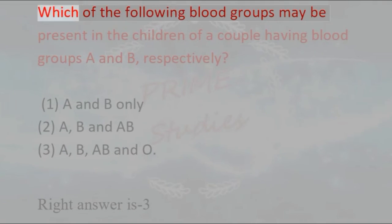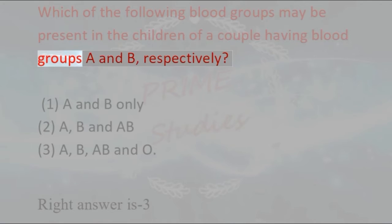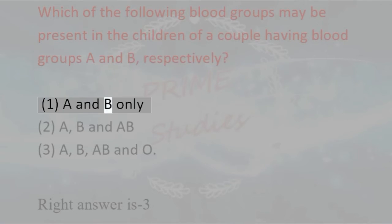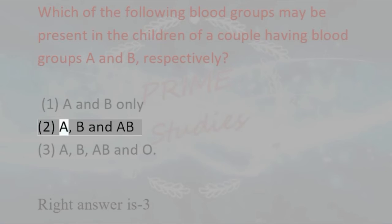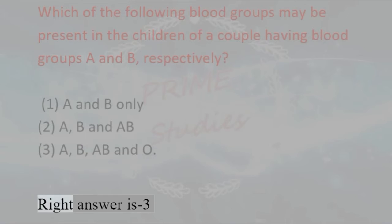Which of the following blood groups may be present in the children of a couple having blood groups A and B respectively? 1. A and B only, 2. A, B, and AB, 3. A, B, AB, and O. Right answer is 3.